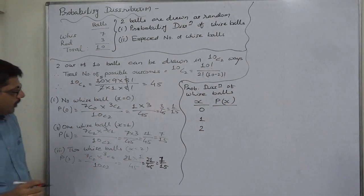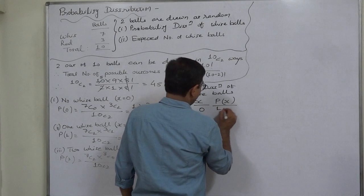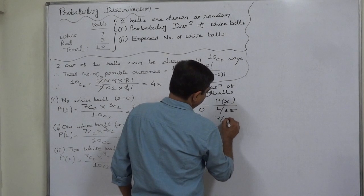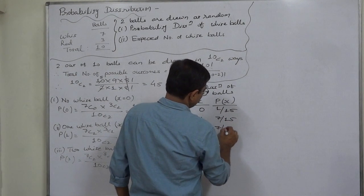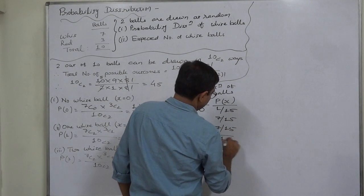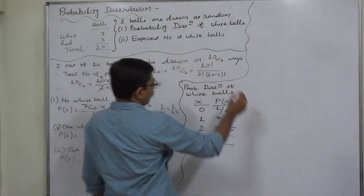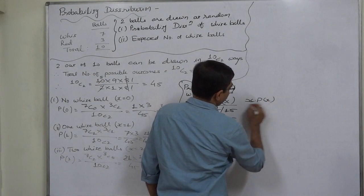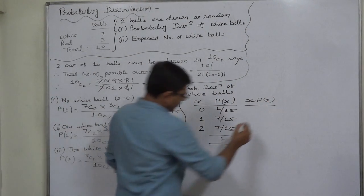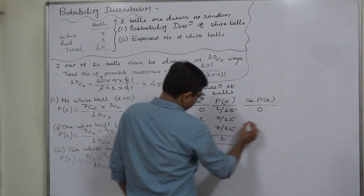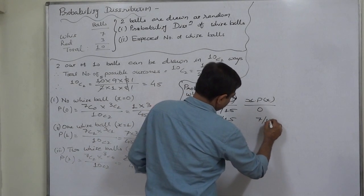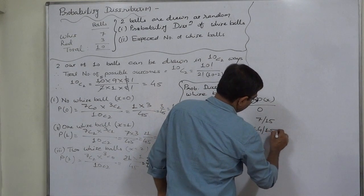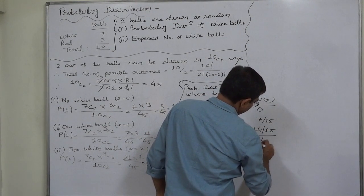X represents the number of white balls drawn, which can be 0, 1, or 2. P(X) is the probability of drawing that respective number of balls: for zero white balls it is 1/15, for one white ball it is 7/15, and for two white balls it is also 7/15. To find the expected number of balls, we compute the column of x times P(x): 0 times anything is 0, 1 times 7/15 is 7/15, and 2 times 7/15 is 14/15.